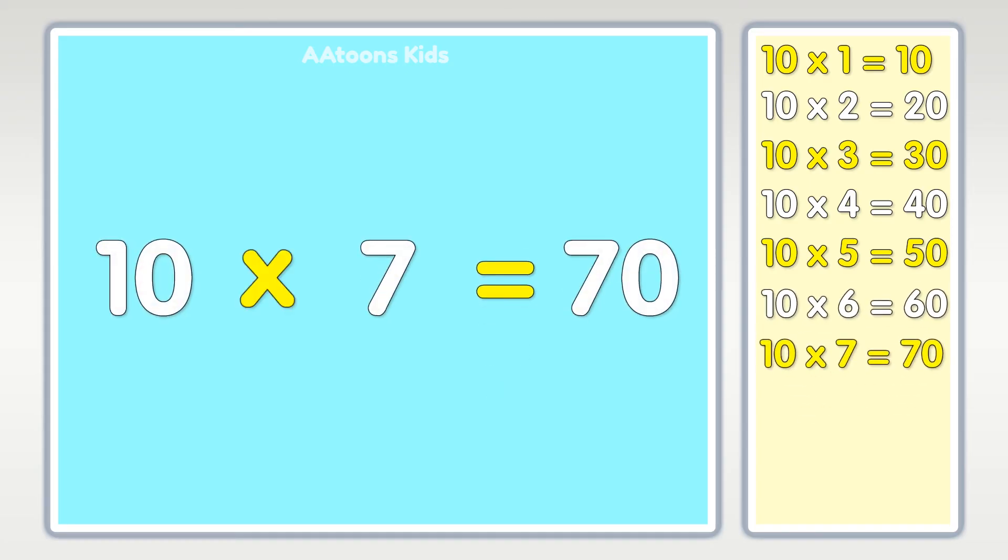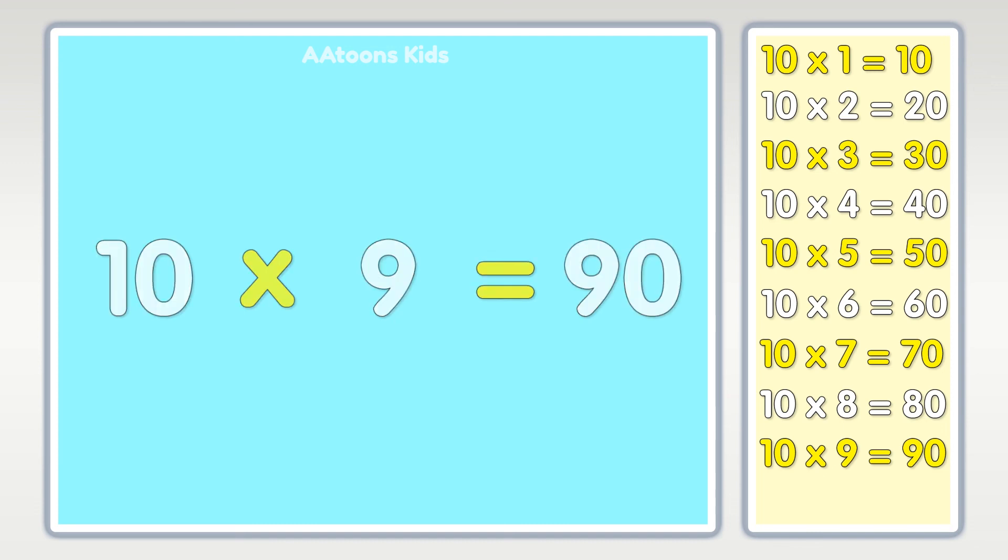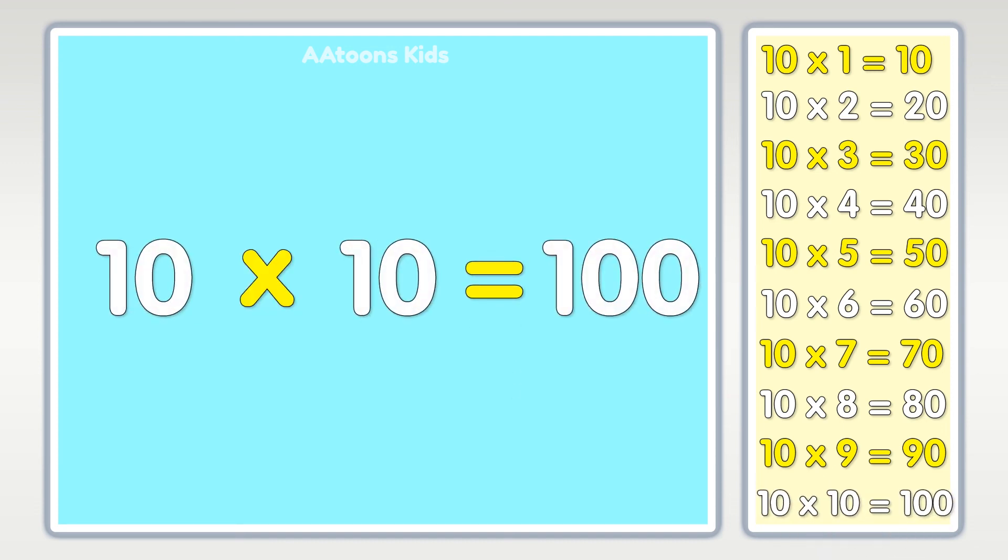Ten times seven is seventy, ten times eight is eighty, ten times nine is ninety, ten times ten is one hundred.